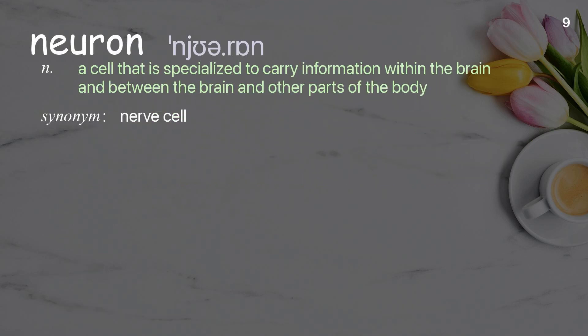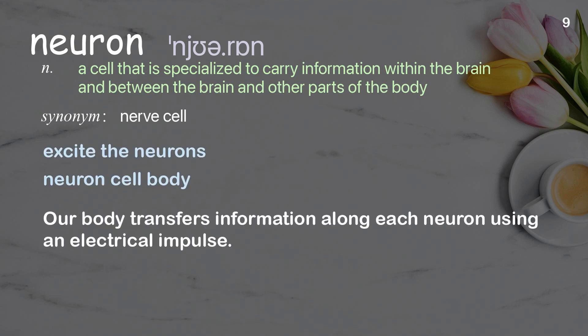Neuron: A cell that is specialized to carry information within the brain and between the brain and other parts of the body. Examples: Excite the neurons. Neuron cell body. Our body transfers information along each neuron using an electrical impulse.